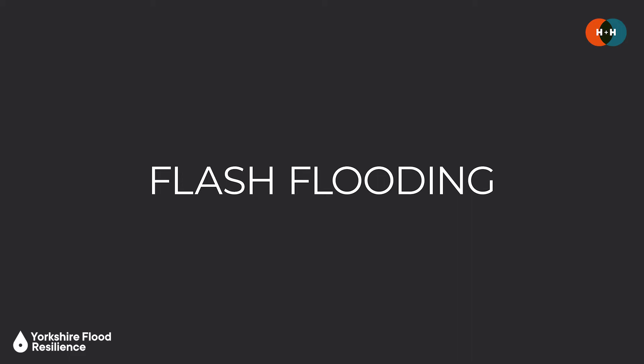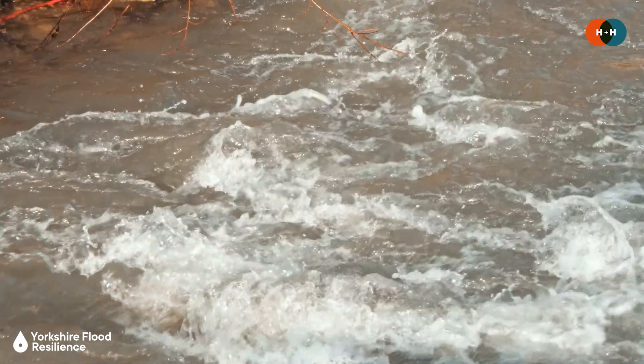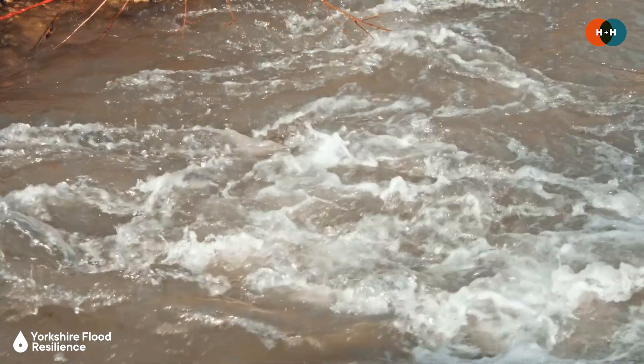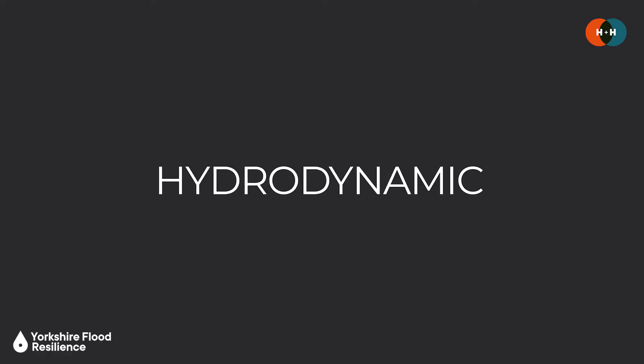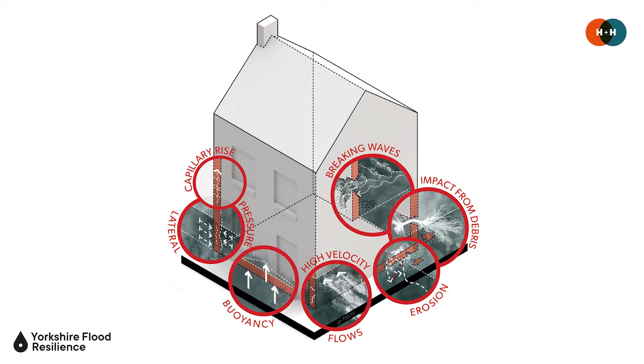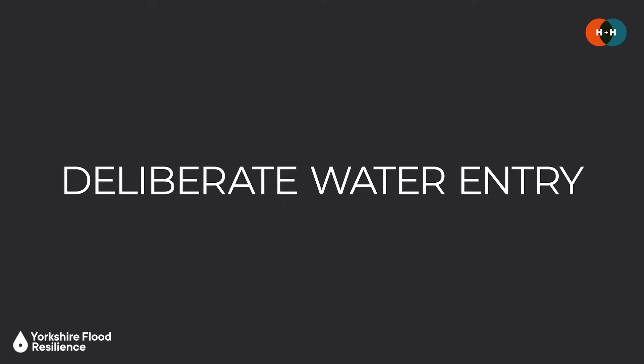It could also be that you're in a context where flash flooding occurs and there might not actually be enough time to fit and install resistance measures. Or it might be that the resistance measures you have in place are overtopped or breached. Given that significant hydrostatic and hydrodynamic loads can build up around flood resistance measures, it can be advisable to actually let the water in to relieve that structural loading — often termed deliberate water entry.